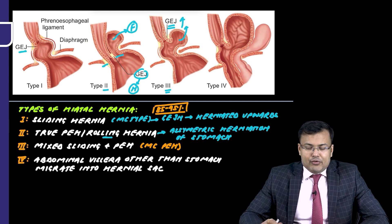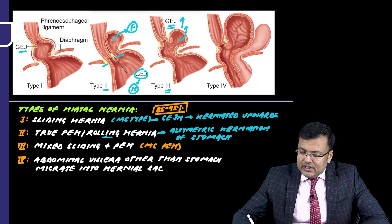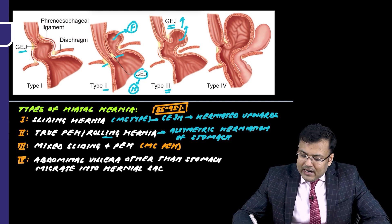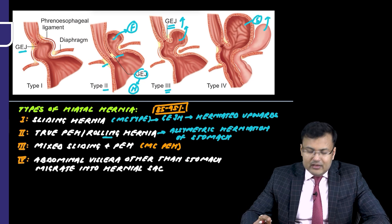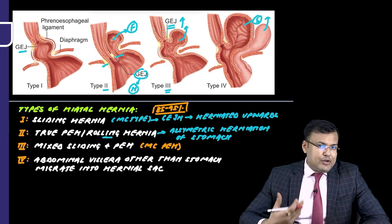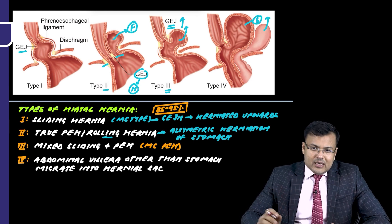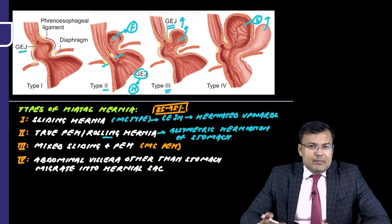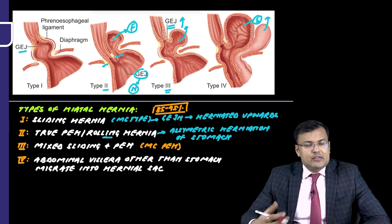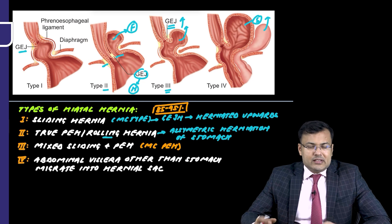In Type 4, apart from herniation of the stomach, there is herniation of some other part of the bowel as well. So if abdominal viscera other than the stomach migrates into the hernia, that is Type 4.